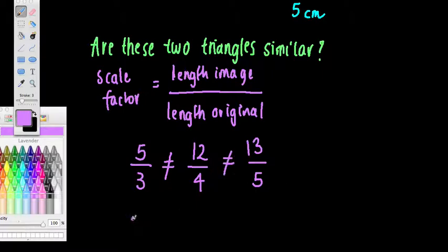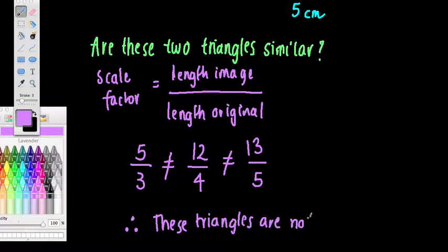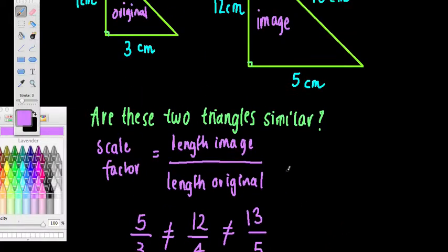Therefore, these triangles are not similar. And why? Because their sides are not in the same ratio. So this part here, this ratio, length of image over length of original, it is not the same for each side.